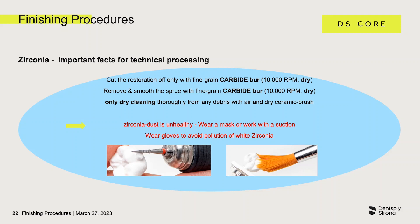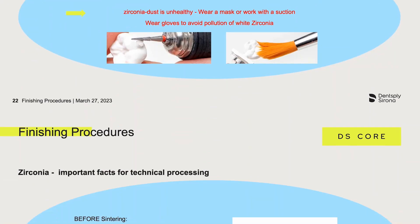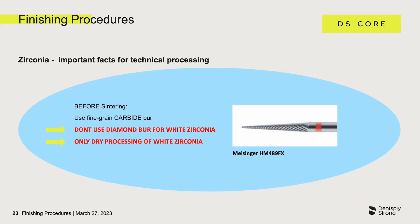It is important to remove any dust residues from the surface both outside and inside, using a dry brush or oil-free compressed air. Please beware: zirconia dust is unhealthy — work with a suction device or wear a mask. It is of the utmost importance to only work on the whiting with carbide drills. Diamond instruments are often silicate bonded, which could lead to a reduction in the aesthetic appearance of the finished restoration — for example, the translucency could suffer, or the crown could get opaque spots or appear very opaque overall.